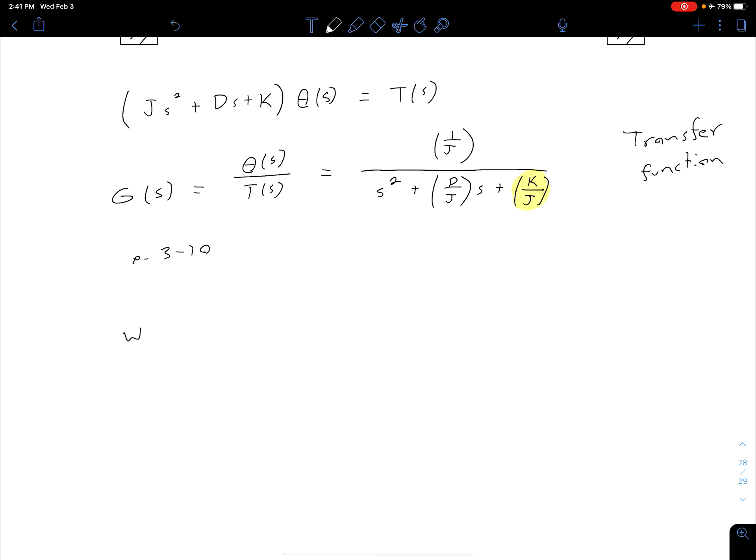We know that this term right here is our omega_n squared. So we can say that our omega_n is then equal to the square root of K/J. Notice we don't have unity gain, so we want to be careful to use that term from the denominator and not from the numerator.